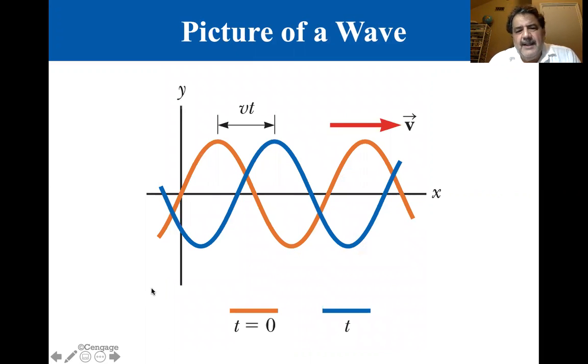Here's a picture of a wave. At T equals zero, we have the orange wave. At some time T later, we have the blue wave. So you can see that it has traveled from here to here. And so the wave has a velocity V and from this wave front to this wave front is the velocity times the time that it took. So you can see this wave traveling down the X axis.